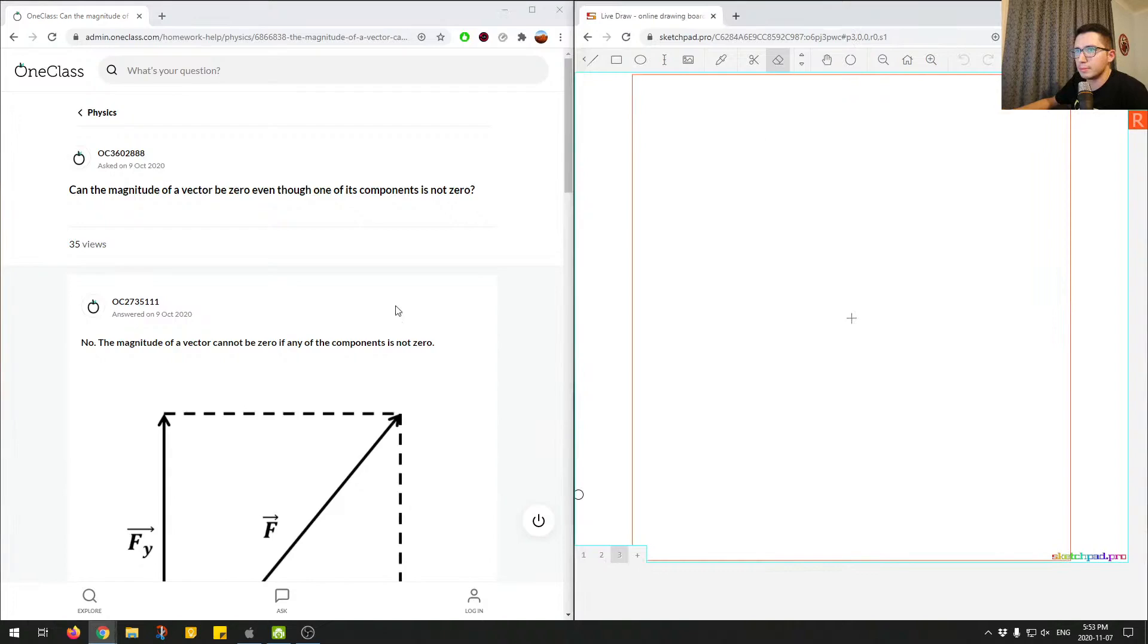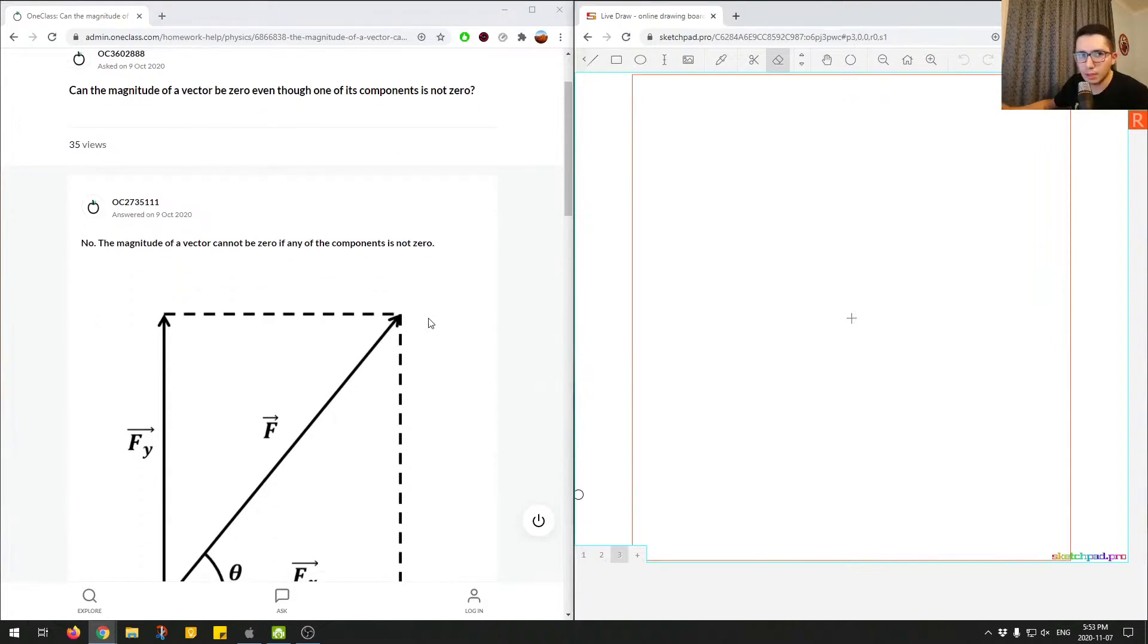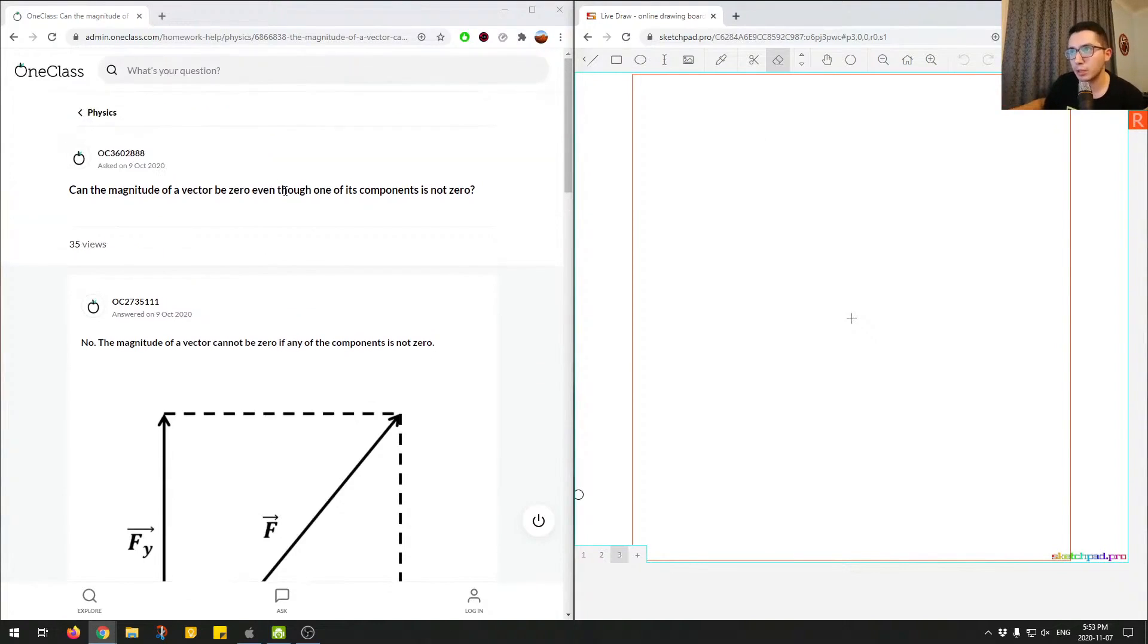Let's move on to question number three. In this question we're asked, can the magnitude of a vector be zero even though one of its components is non-zero, so not zero.